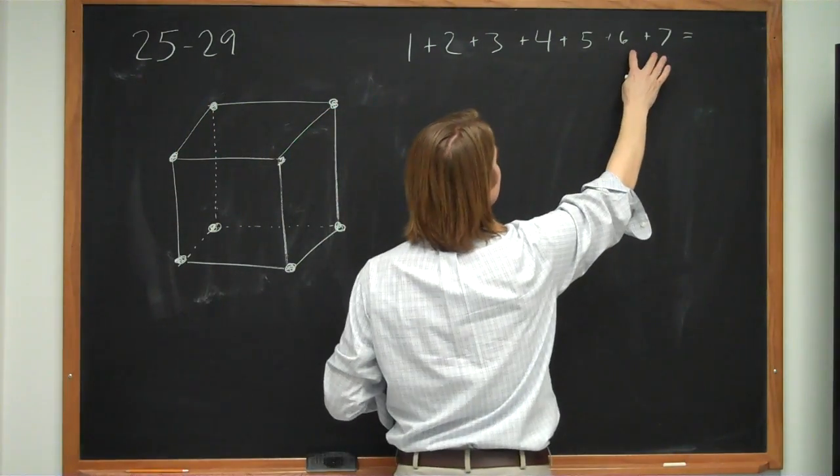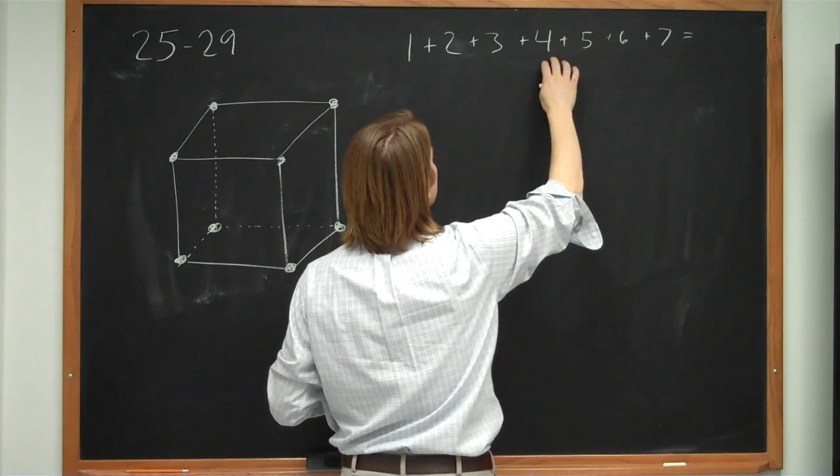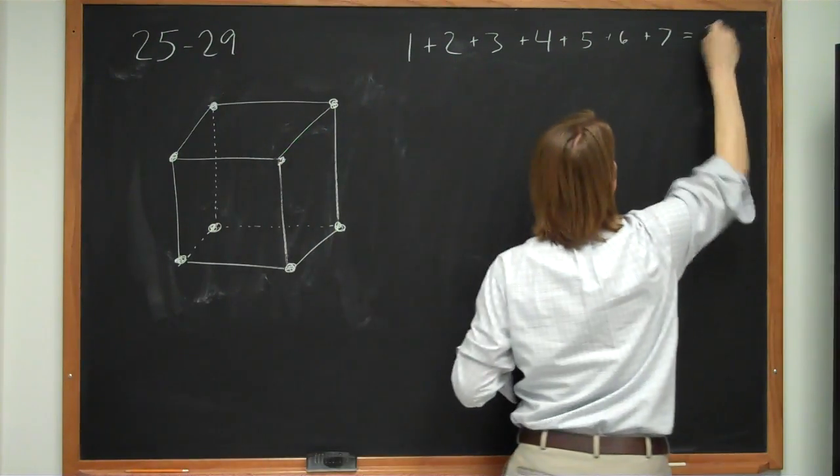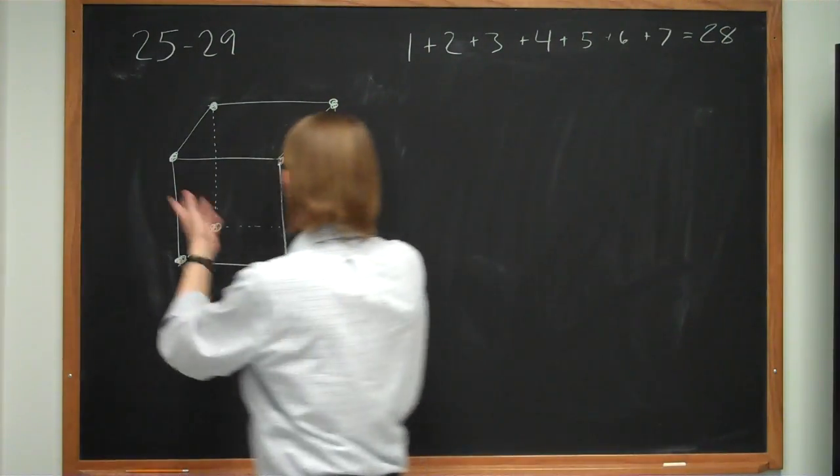And what is that? That's six, that's 13, 18, 22, 5, 6, 7, 28. So there should be 28 pairs that you can imagine on this thing.